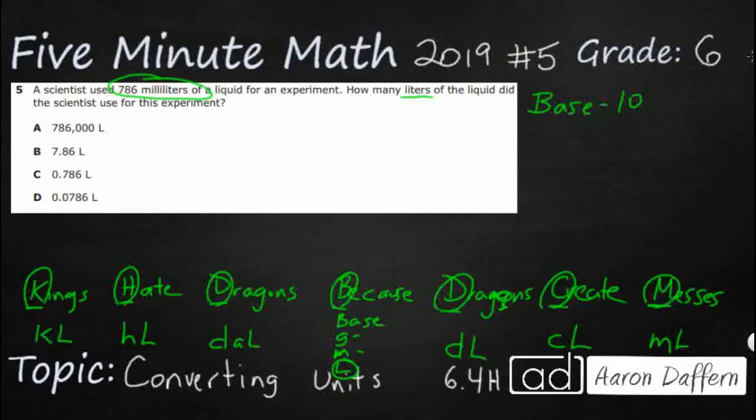We're going to treat this like it's place value here. We have 786 milliliters. When we're dealing with 786 milliliters, what we do is we build that number with the ones place in the unit place. Milliliters is over here on the far end.